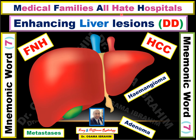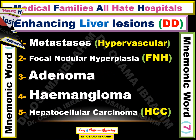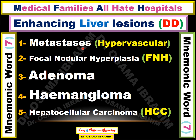Metastases — consider this as the first possibility if there are multiple liver lesions. If it is enhancing, consider hypervascular metastases. This is from 'Medical.' F is for focal nodular hyperplasia, A is for adenoma, H is for hemangioma, and another H is for hepatocellular carcinoma. These are five of the most common enhancing liver lesions in a post-contrast study.